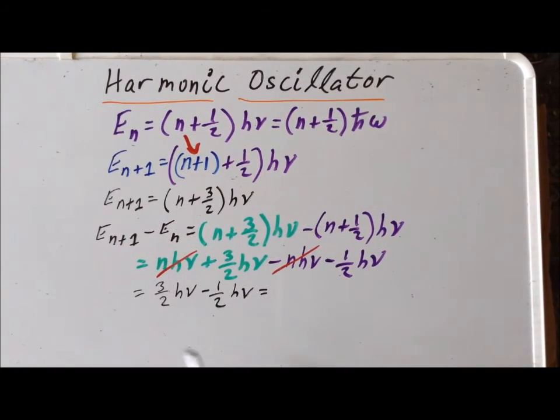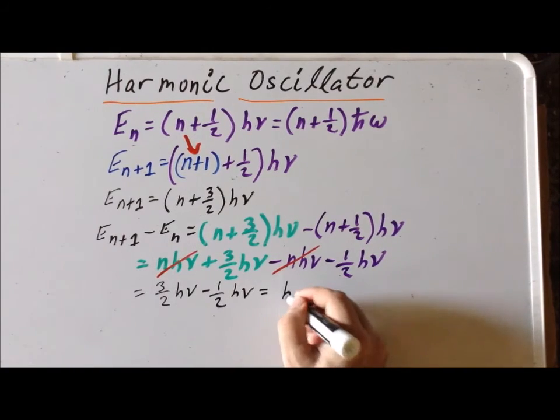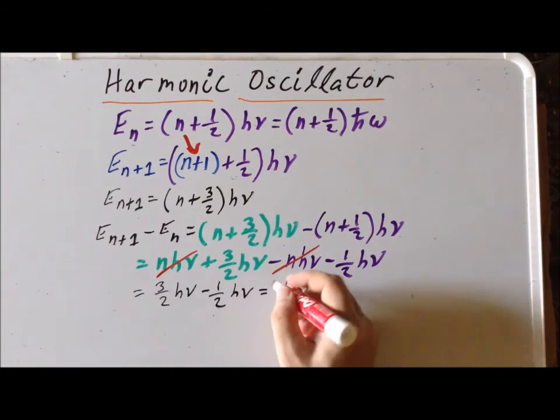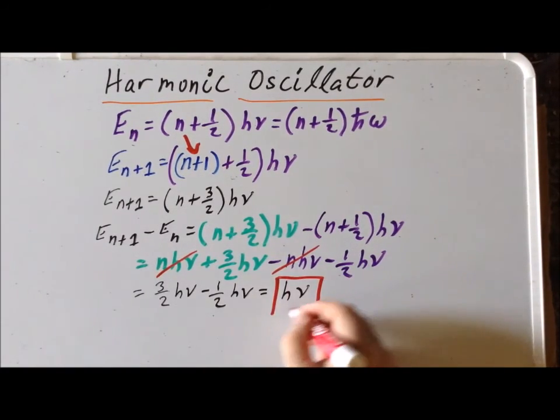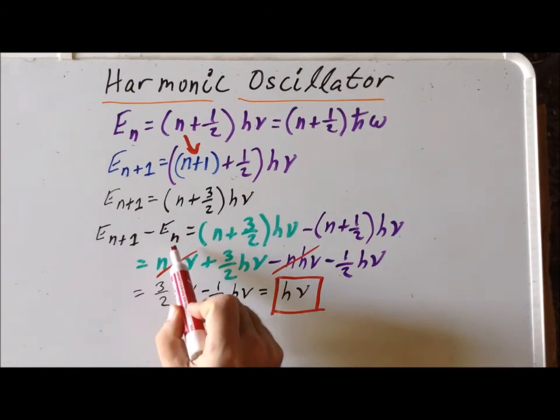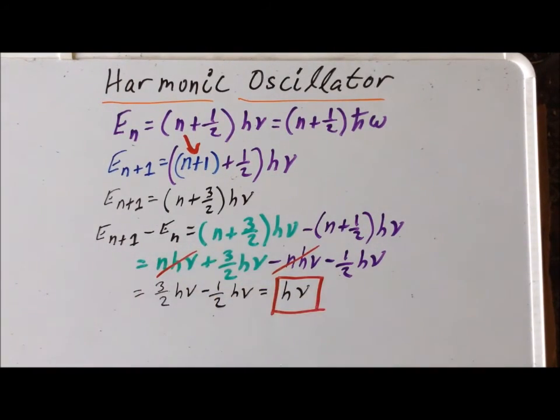So the difference between any two levels is h times nu. And the important thing to notice here is that in this expression, n does not come in at all. So it doesn't matter which n, n plus one we use, the difference in energy levels is exactly the same.